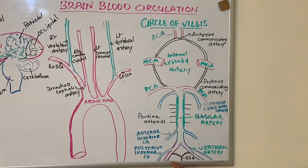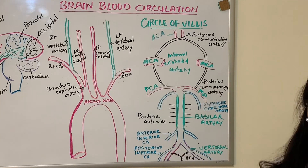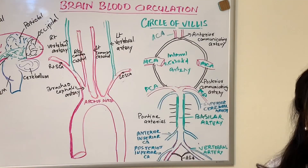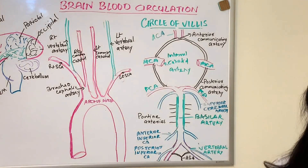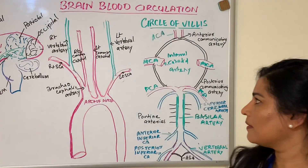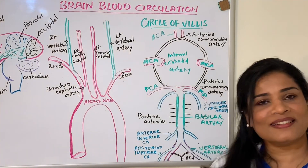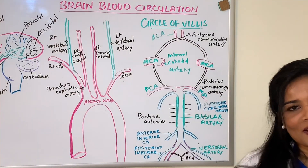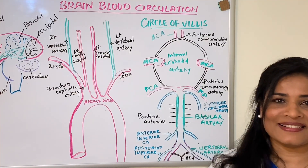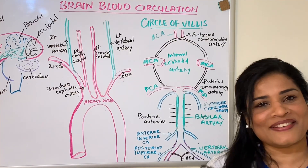At the bottom, the two vertebral arteries are connected by another artery called the anterior spinal artery, which supplies blood to the spine. That's all about the blood circulation of the brain — hope you all enjoyed, and stay tuned for the next video.